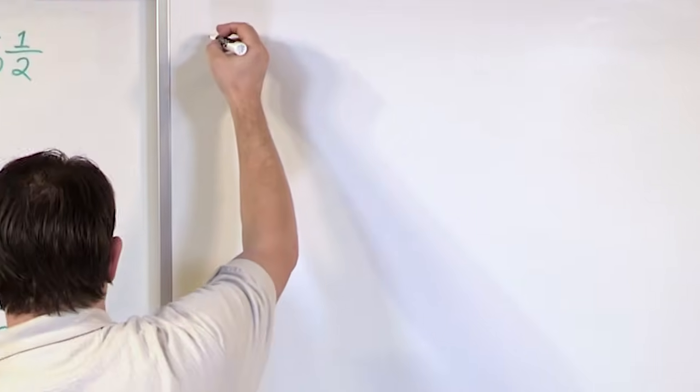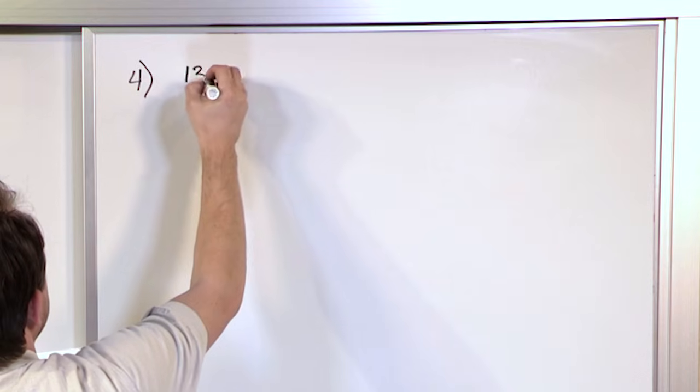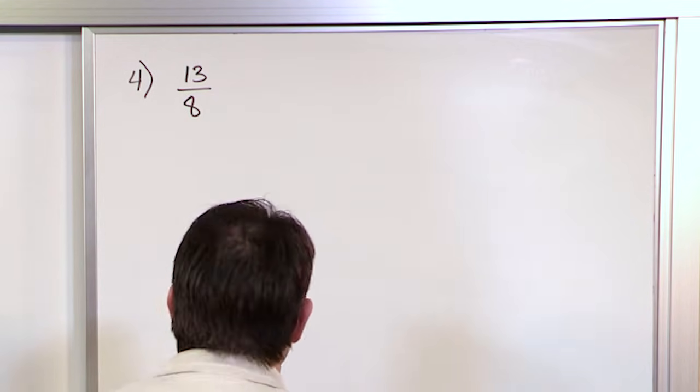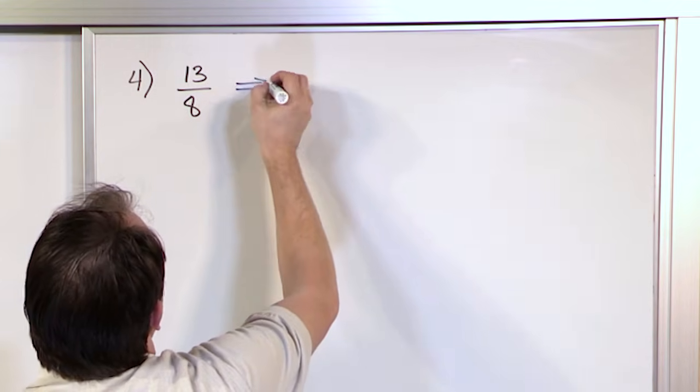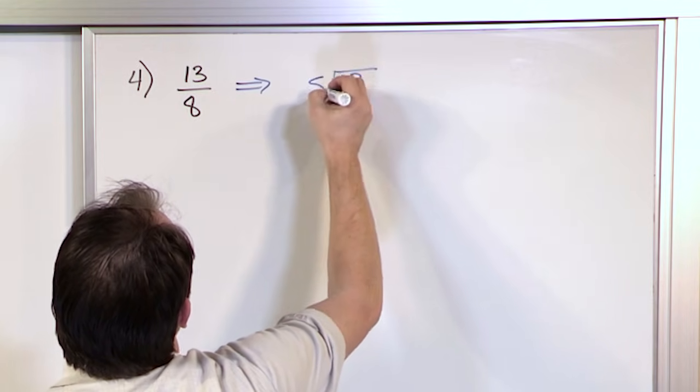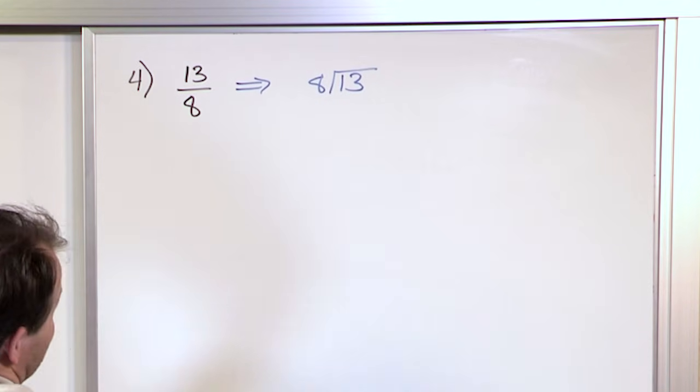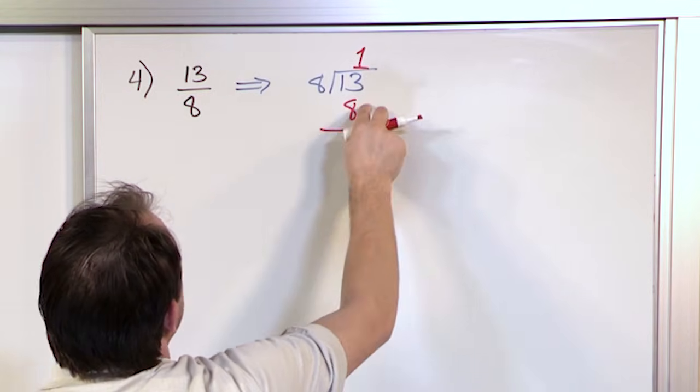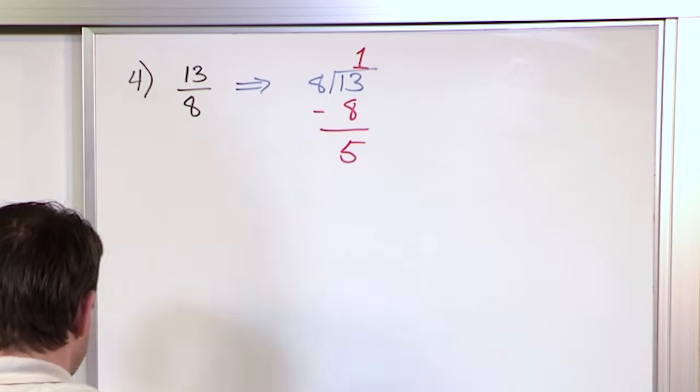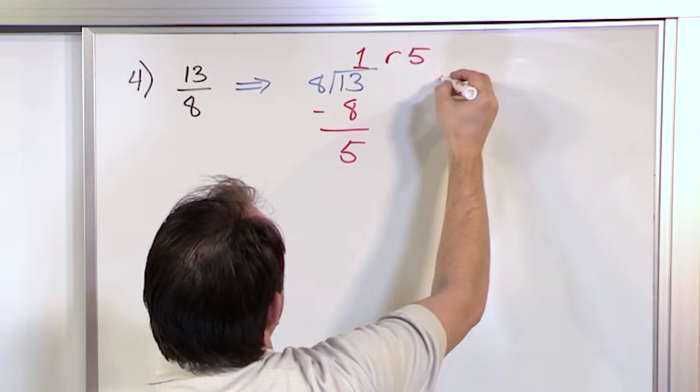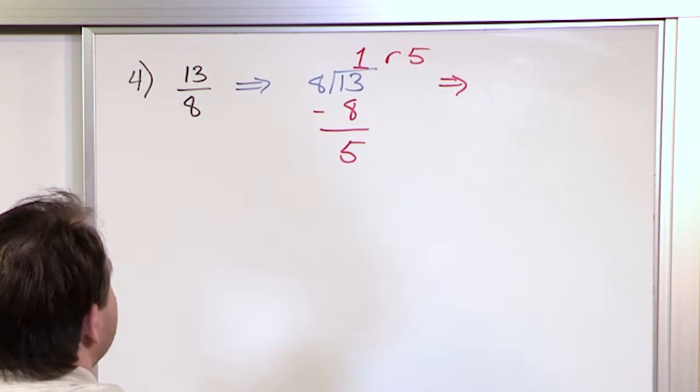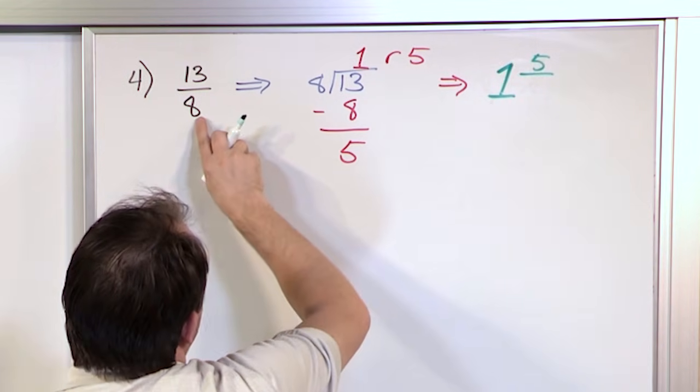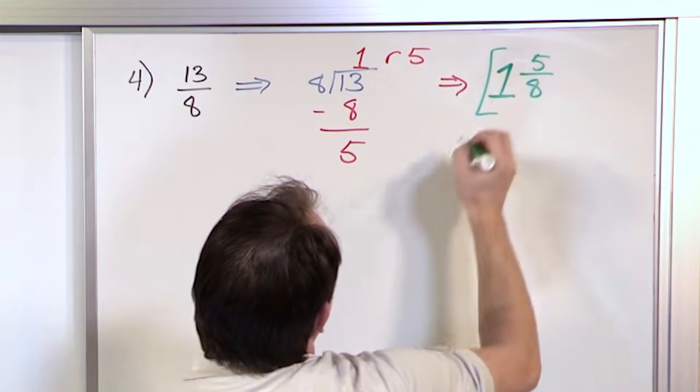Our next problem: let's say it is 13 eighths. How do we transform it into a mixed number? We're taking 13 and dividing 8 into it. 8 times 1 is 8 and 8 times 2 is 16, that's too much. So it only goes one time. 13 minus 8 is only going to give you a 5, so the remainder is 5.